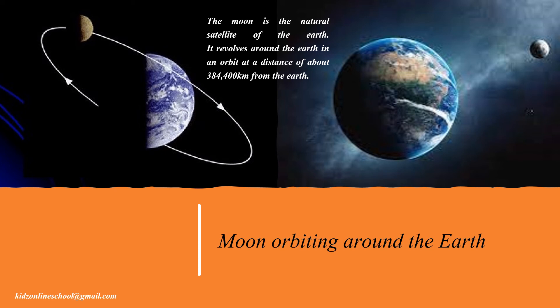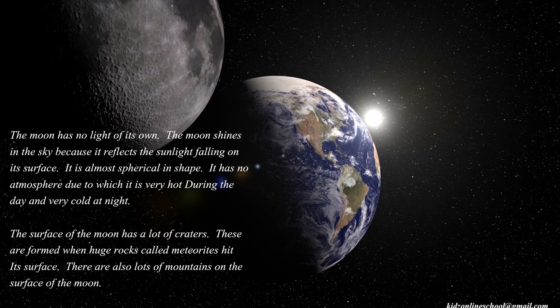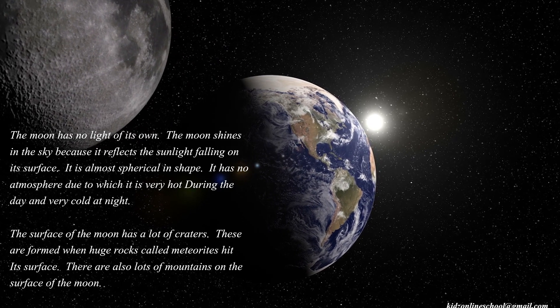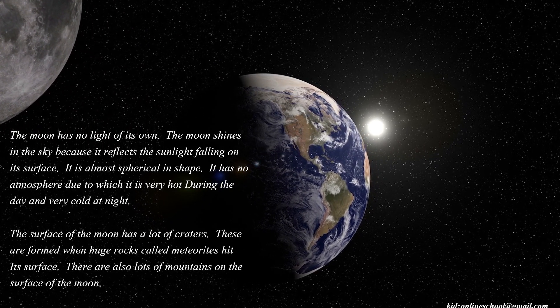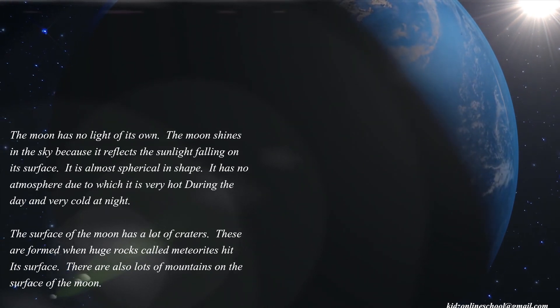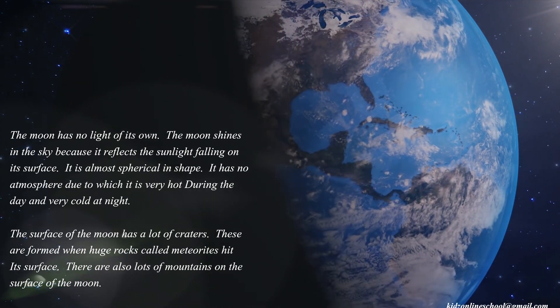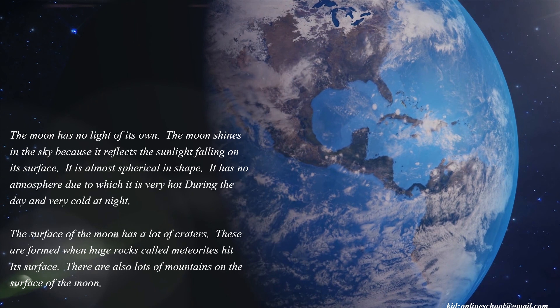The Moon revolves around the Earth in an orbit at a distance of about 3,84,400 km from the Earth. The Moon has no light of its own — it shines in the sky because it reflects the sunlight falling on its surface. It is almost spherical in shape. It has no atmosphere, due to which it is very hot during the day and very cold at night. The surface of the Moon has a lot of craters, formed when huge rocks called meteoroids hit its surface. There are also lots of mountains on the surface of the Moon.